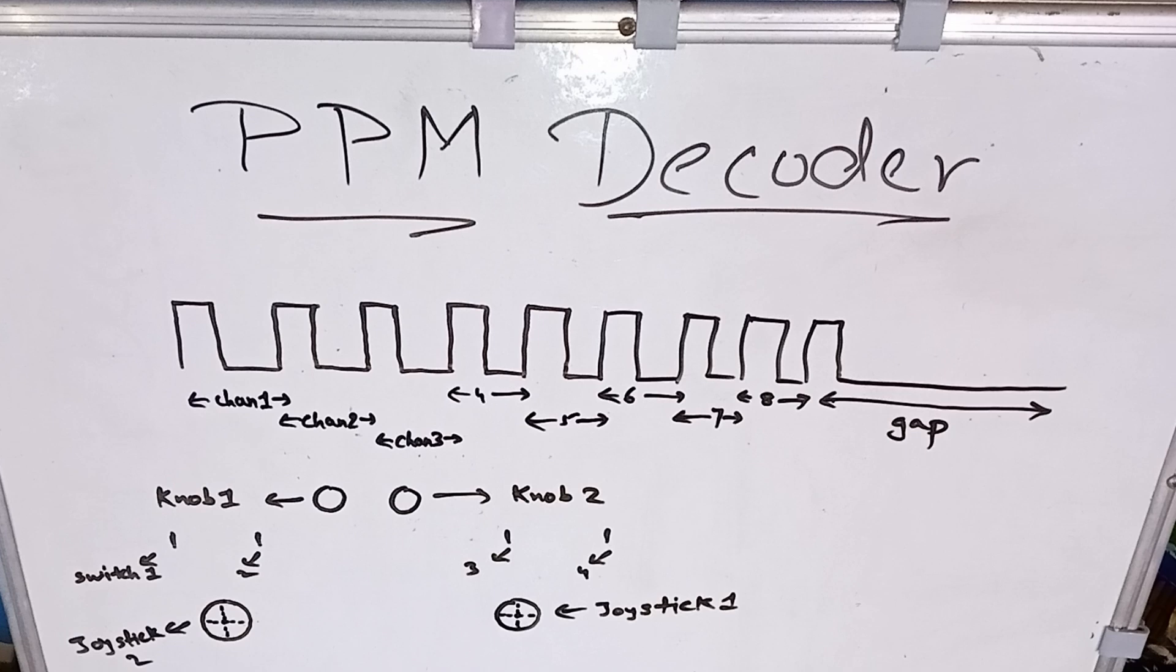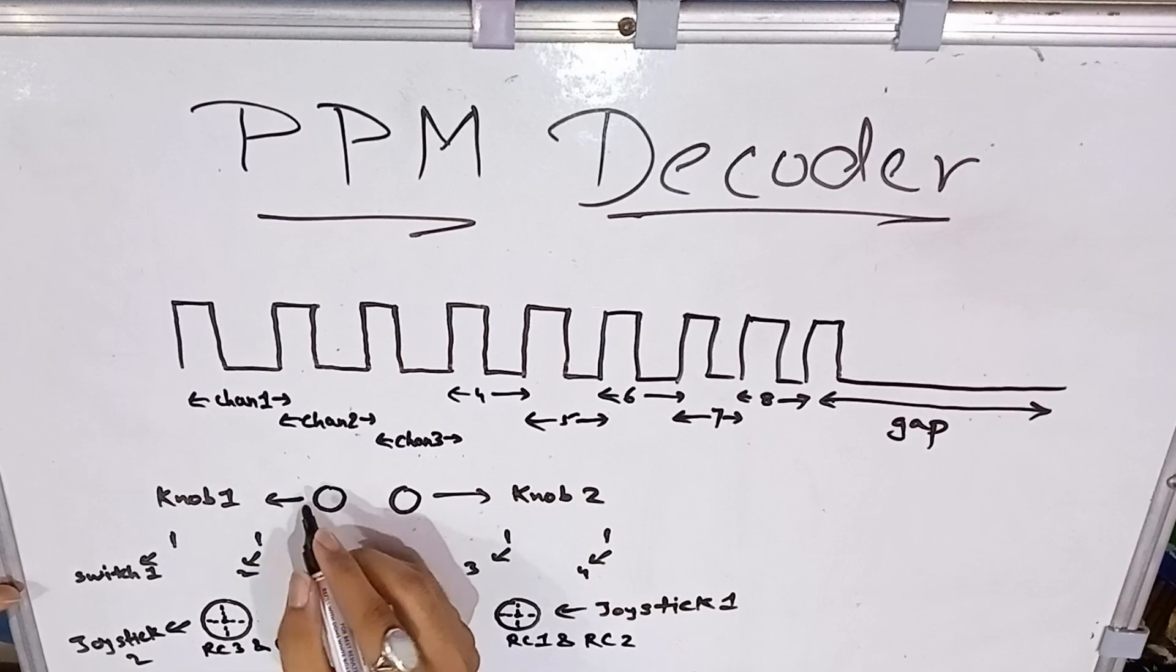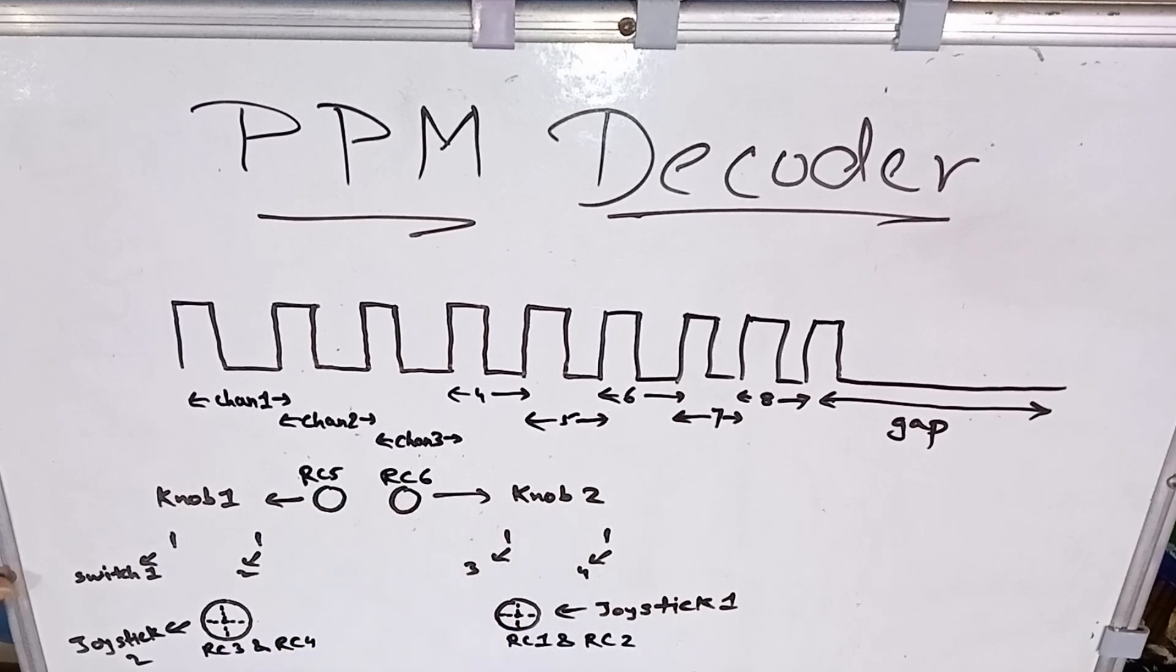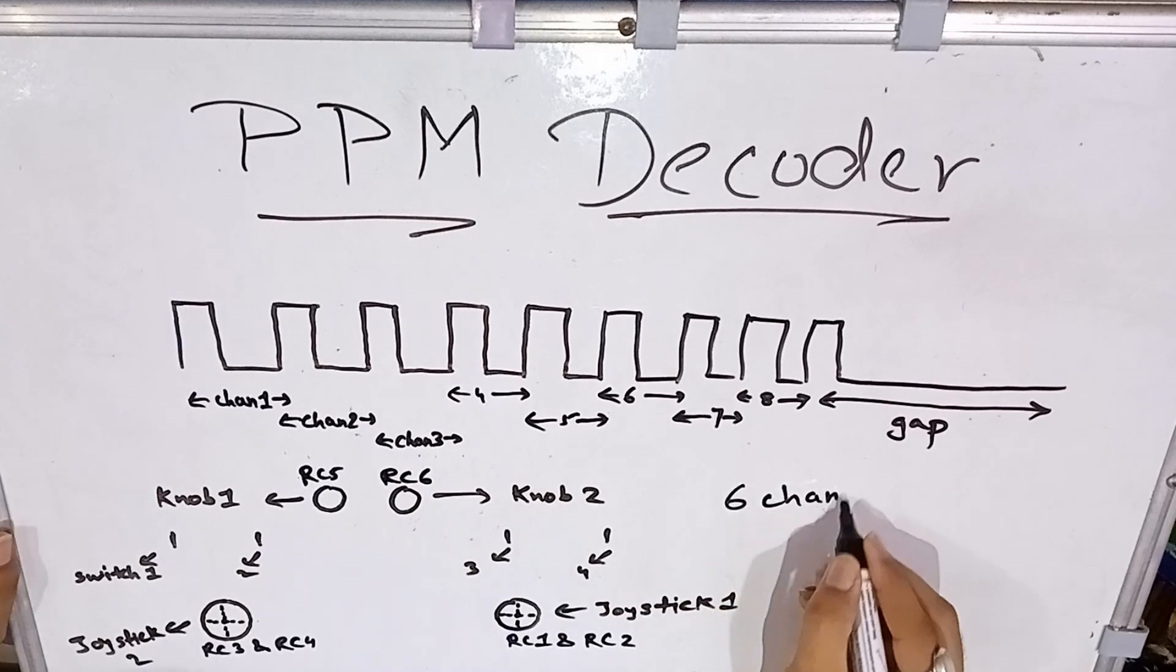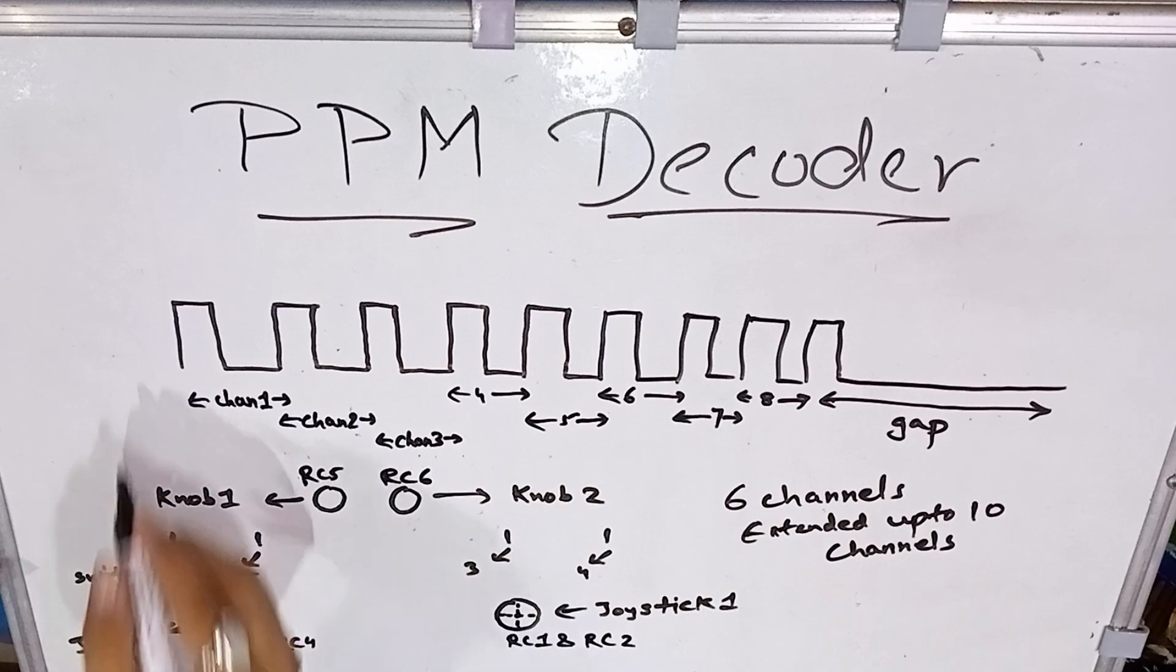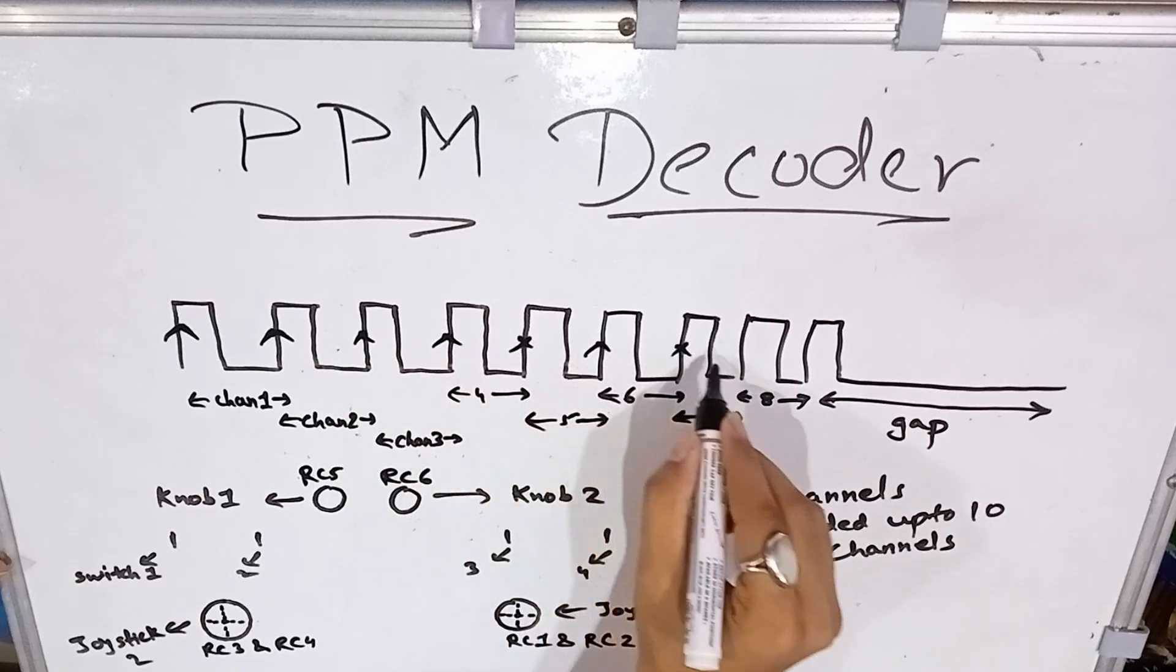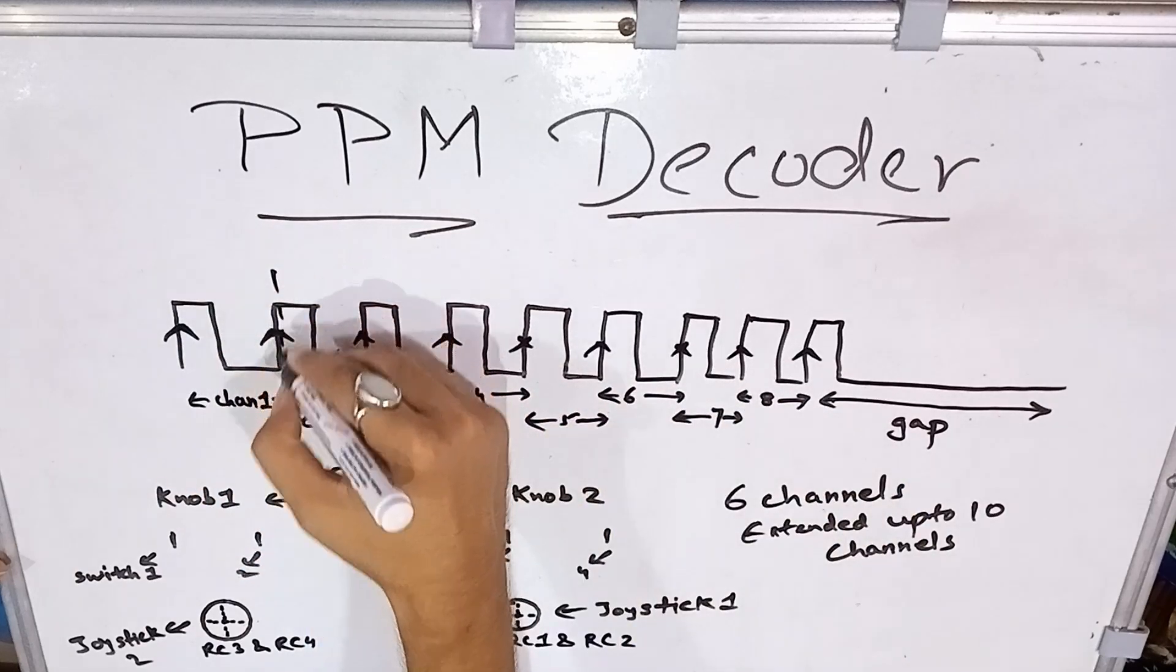Right now only six channels could be used. You can extend it up to ten channels in the same FSi6 AB receiver. Knob one and two are the active two channels right now, and two on joystick one and two on joystick two: RC1, RC2, RC3, RC4 on joystick two, and RC5 is knob one, RC6 is knob two. These are the six active channels but we will be receiving eight channel data.